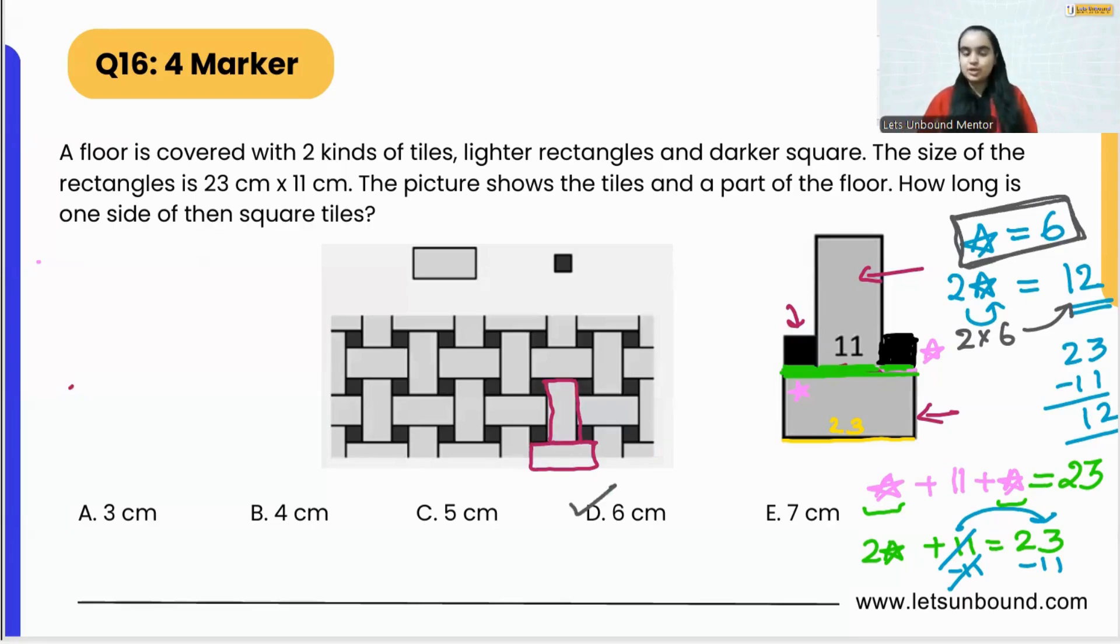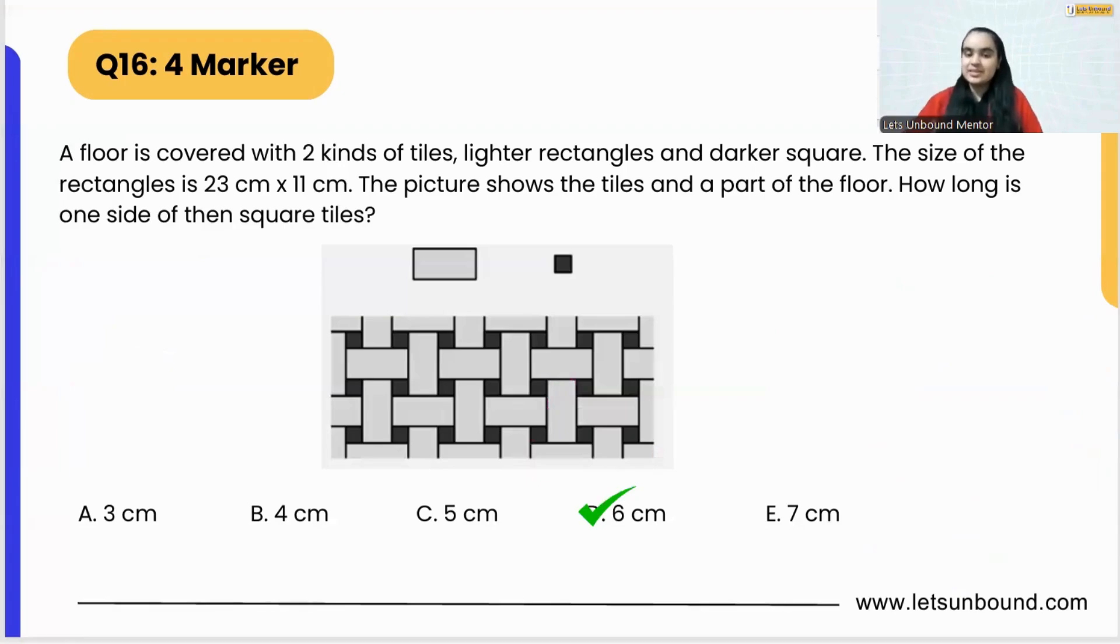So just focus on one part in the picture. They have given us the hint, the shorter side is 11, and then we need to find out the square. The length of square, and two squares along with the shorter side of rectangle will make up a longer side of rectangle. Using that we can form the equation and then we can find out the value of star, that is the length of square, and that's it we are done with our question. So the answer is 6 centimeters, that is option D.